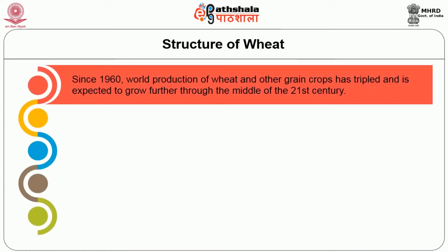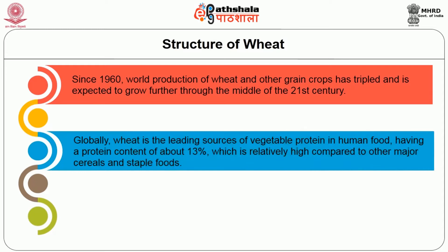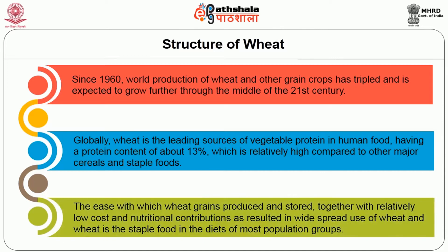Since 1960, world production of wheat and other grain crops have tripled and is expected to grow further through the middle of the 21st century. Globally, wheat is the leading source of vegetable protein in human food, having a protein content of about 13 percent, which is relatively high compared to other major cereals and staple foods. The ease with which wheat grains can be produced and stored, together with relatively low cost and nutritional contributions, has resulted in widespread use of wheat as a staple food in the diets of most growing populations.